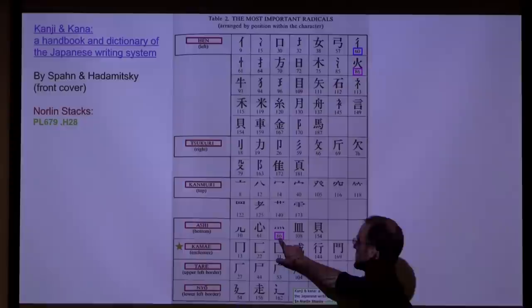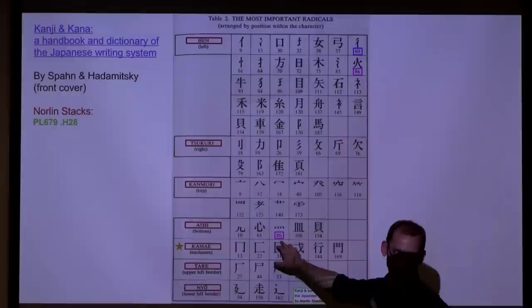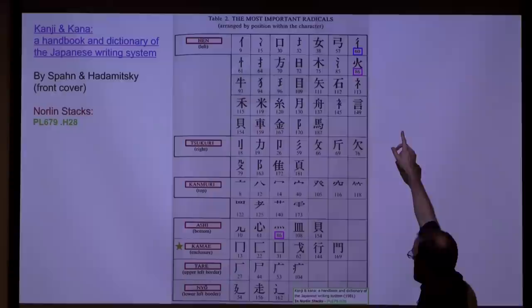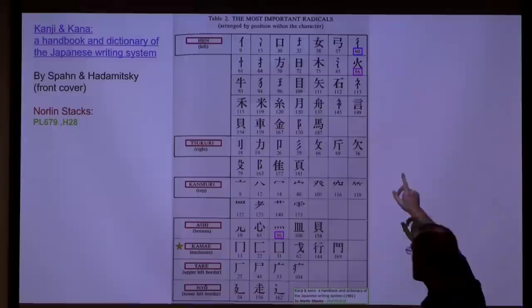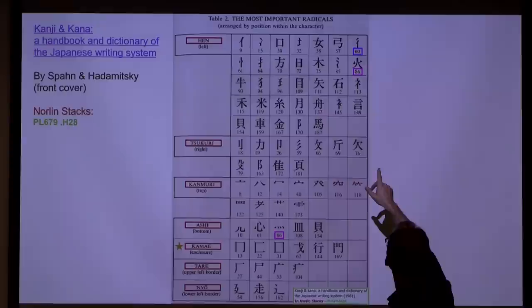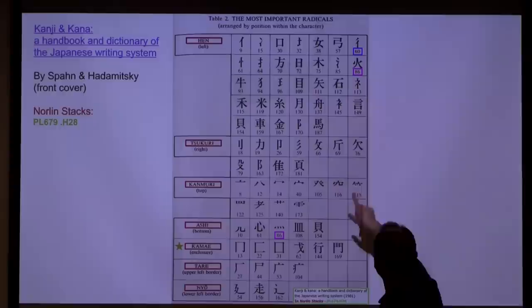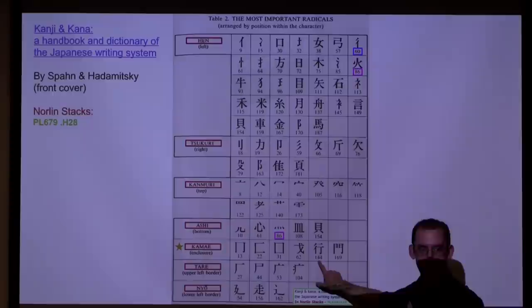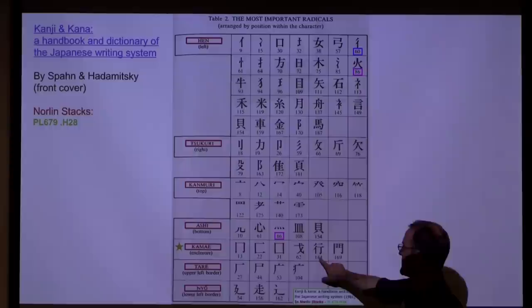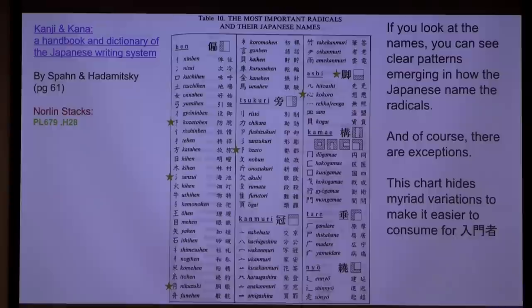These are the standard numbers every radical gets, and every good character dictionary uses the exact same numbering system. Radical 86 appears twice because it's the same radical in different positions. And radical 60 is often confused with radical 144 — notice they have different numbers, so they're not considered the same thing, even though 86's two forms look different but are still considered the same. This gets confusing for students trying to figure things out.